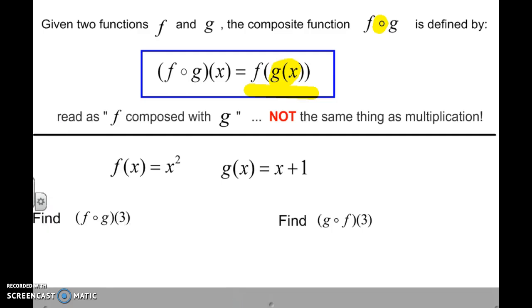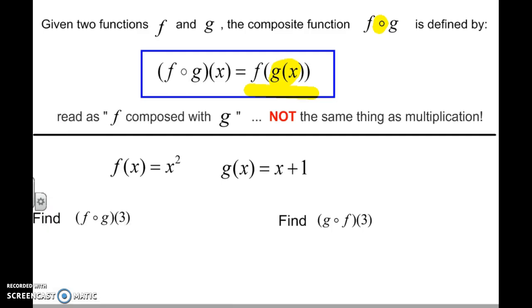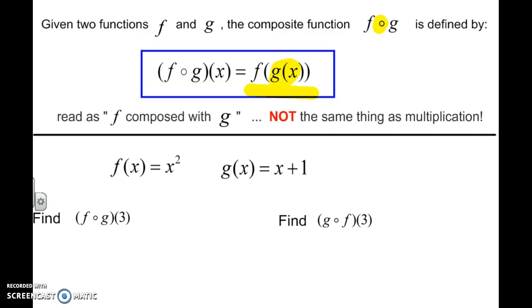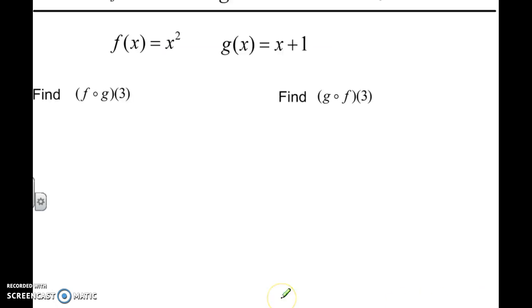Let's look at a couple of examples. Given the function F of X is X squared and G of X is X plus 1, let's answer these questions. The first thing I want you to do is rewrite this in the proper form, so this would be F of G of 3.